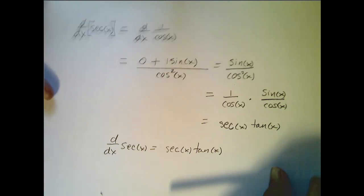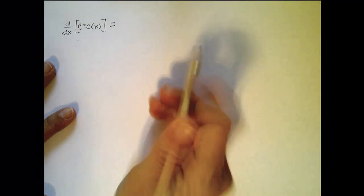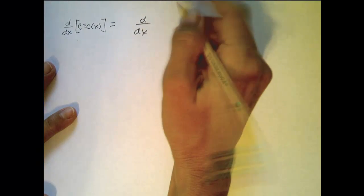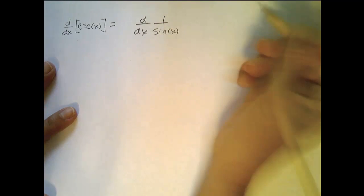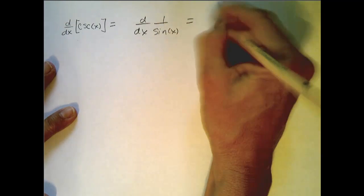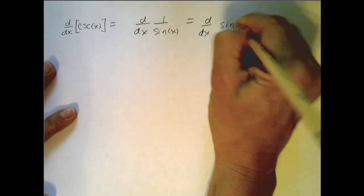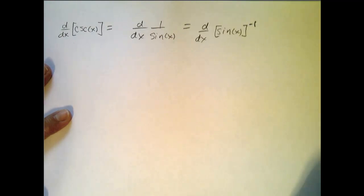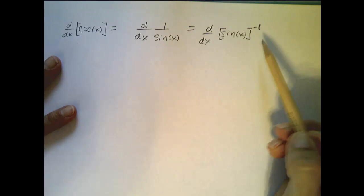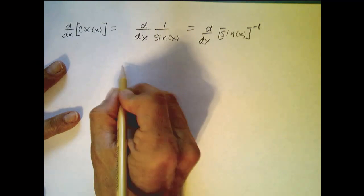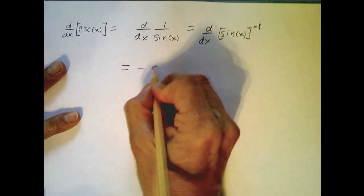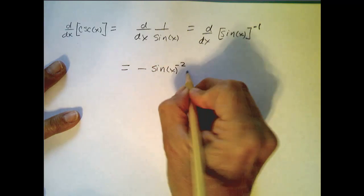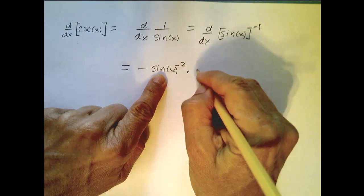Last one. Does anybody think they have an idea of what it's going to be based on what we've done in the previous three? Well, the derivative of cosecant of x equals the derivative of 1 over sine of x. Let's rewrite this as sine of x to the negative 1 and use the chain rule. So this equals negative sine of x to the negative 2 power times the derivative of sine, which is cosine.